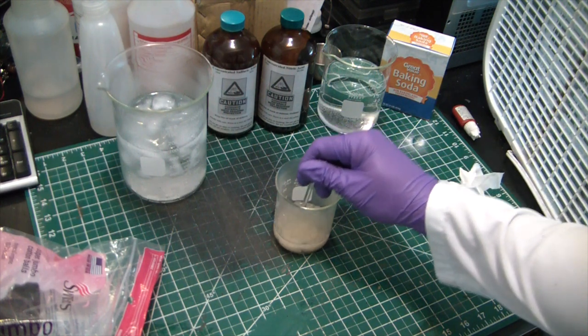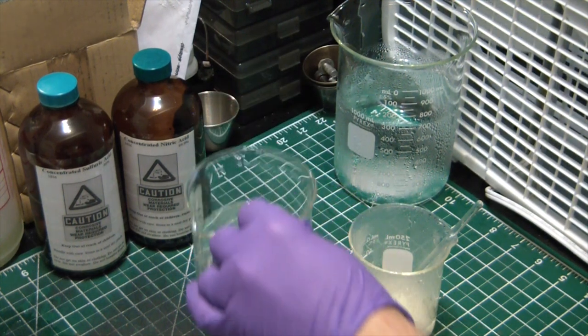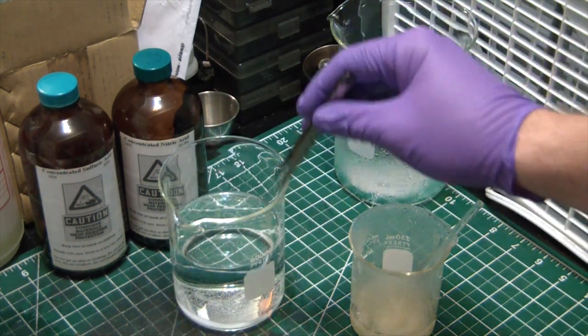At this point I'm just gonna let the mix sit for maybe half an hour or so, let the nitronium ions displace the OH groups on the cellulose and get some cellulose nitrate. All right, it's been about half an hour.